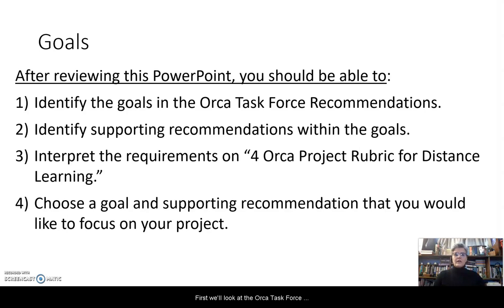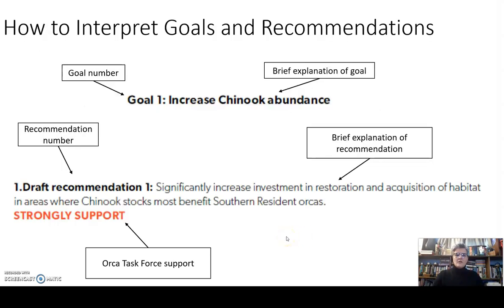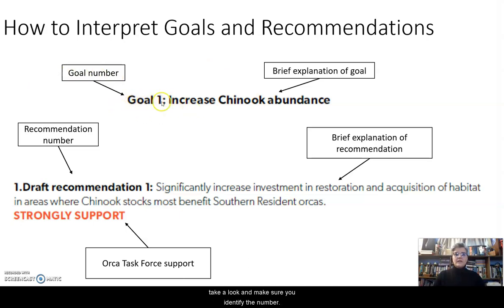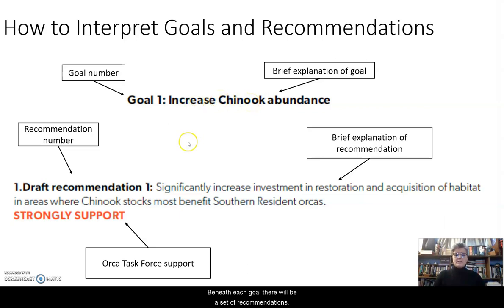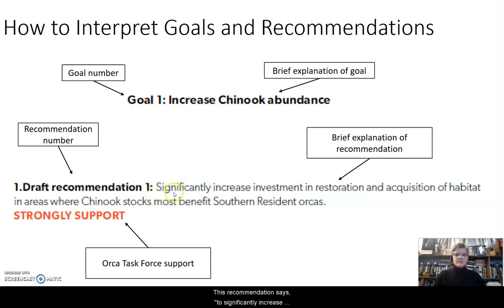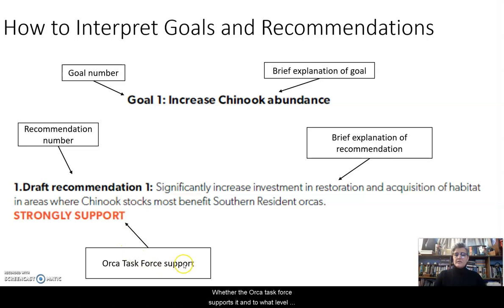First, we'll look at the ORCA Task Force Recommendations. To interpret the goals and recommendations, you're going to see a few things. You're going to look at the goal itself — you'll have the goal number, and there will also be a brief explanation of that goal. In this particular case, this is goal one: to increase Chinook abundance. Beneath each goal, there will be a set of recommendations with a recommendation number and a brief explanation. This recommendation says to significantly increase investment in restoration and acquisition of habitat in areas where Chinook stocks most benefit southern resident orcas. Beneath that, in colored writing, you will find whether the ORCA Task Force supports it and to what level they support it.